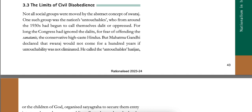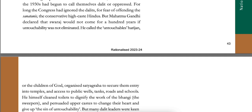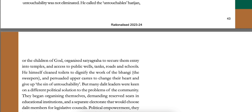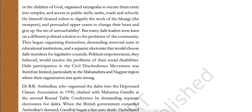The Limits of Civil Disobedience. Not all social groups were moved by the abstract concept of Swaraj. One such group was the nation's untouchables, who from around the 1930s had begun to call themselves Dalit or oppressed. For long, the Congress had ignored the Dalits for fear of offending the Sanatanis — the conservative high caste Hindus. But Mahatma Gandhi declared that Swaraj would not come for a hundred years if untouchability was not eliminated. He called the untouchables Harijan or the children of God, organized Satyagraha to secure them entry into temples and access to public wells, tanks, roads and schools, and himself cleaned toilets to dignify the workers of the Bhangi community. But many Dalit leaders were keen on different political solutions to the problem of the community.